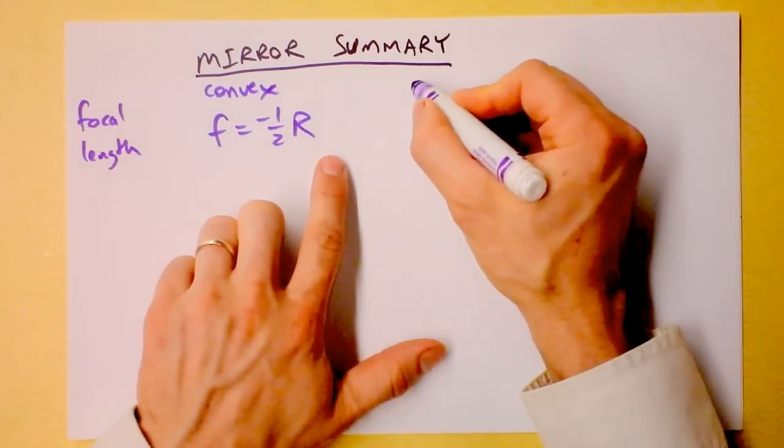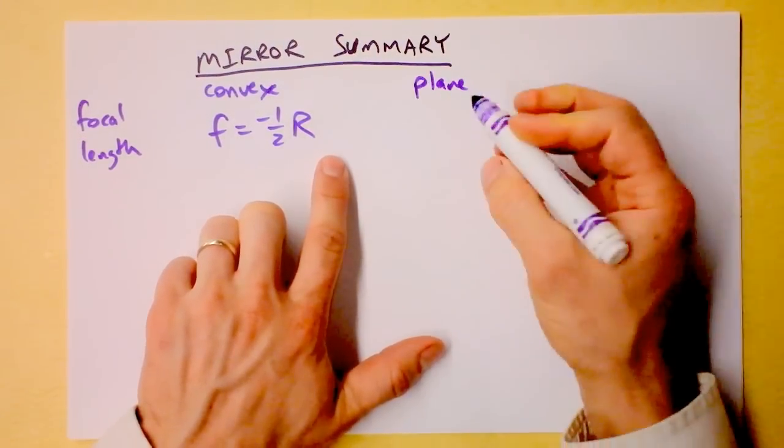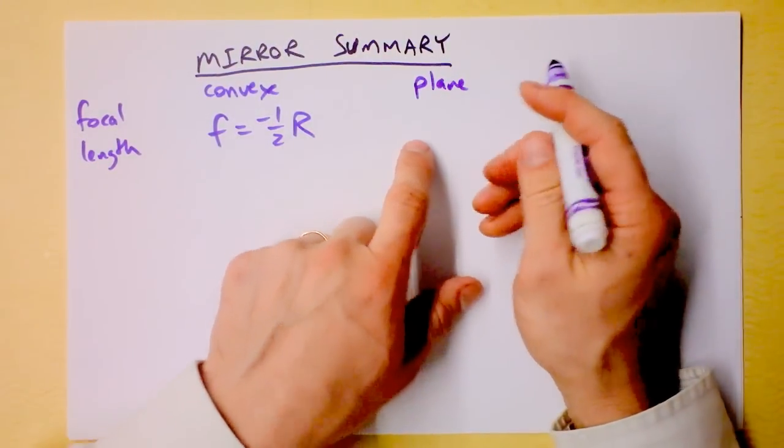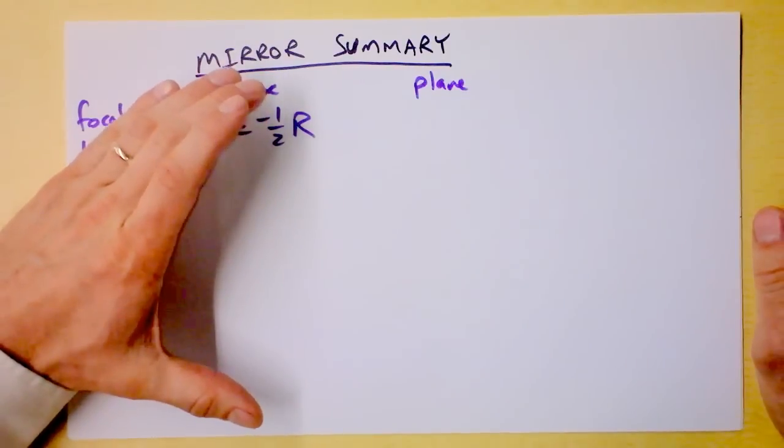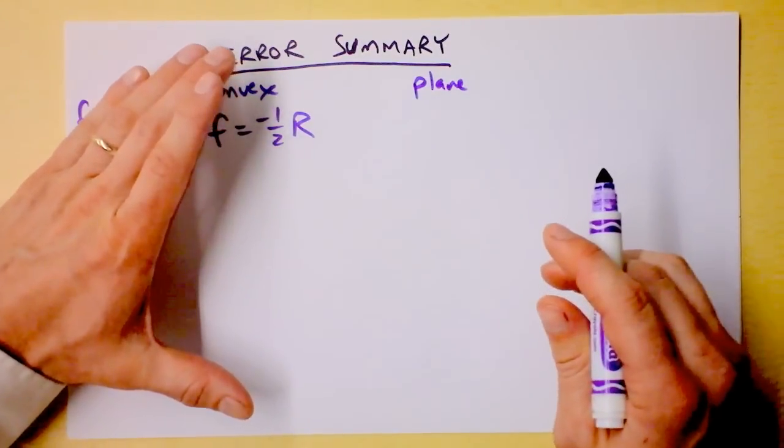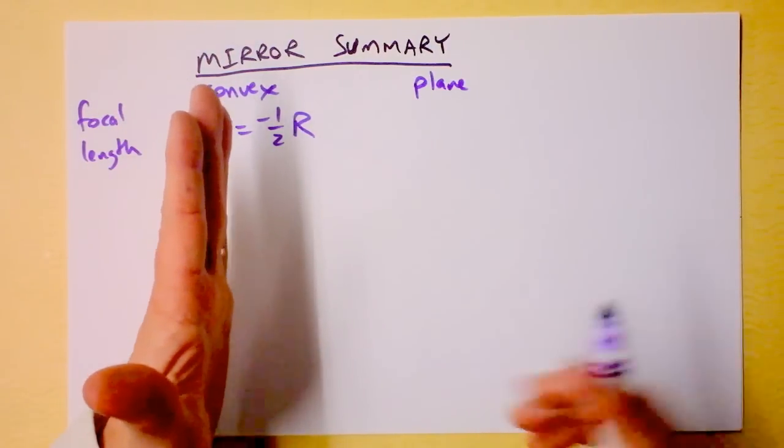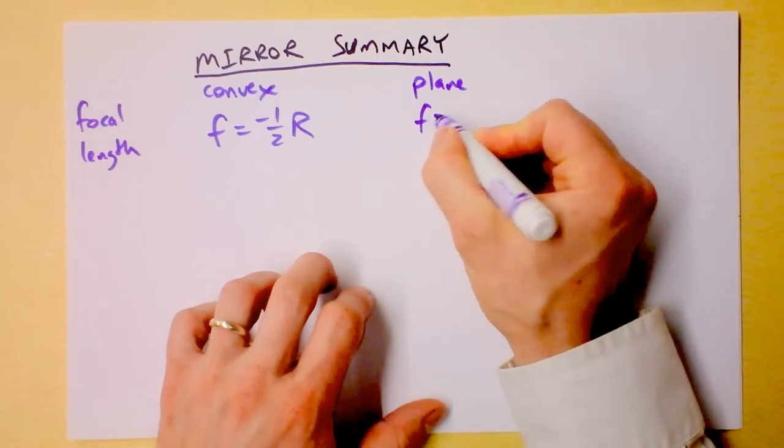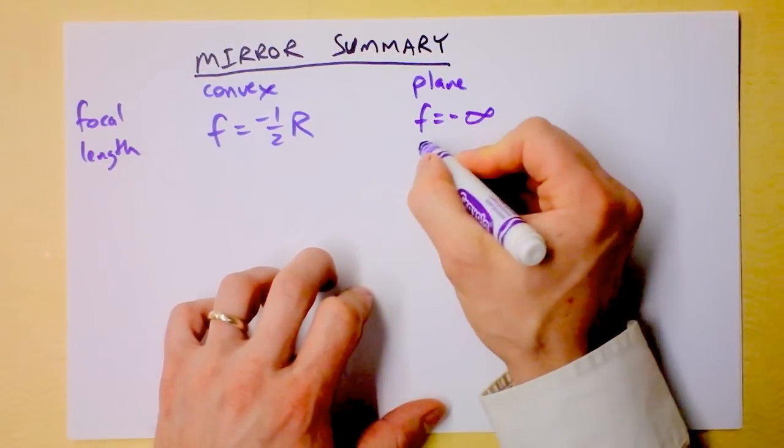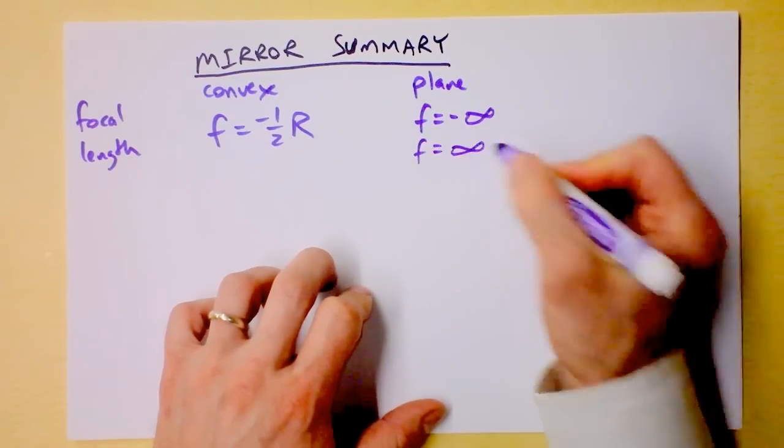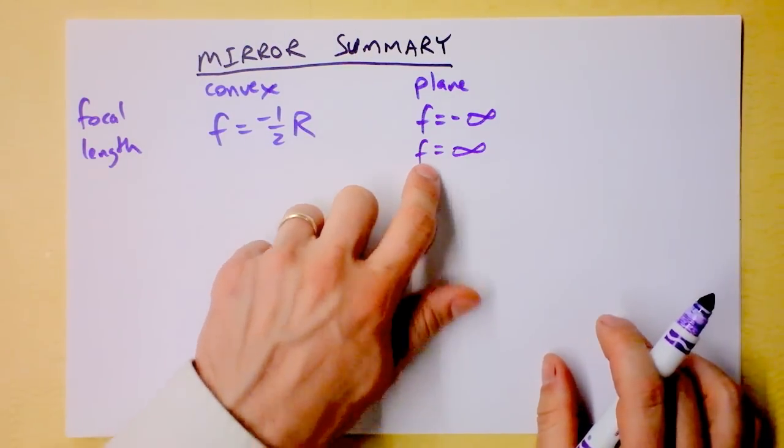And then over here, at the plane mirror, the focal length, well, think about it like this: if it's one-half R, I'm going to use the same equation. I'm going to say that the radius is getting bigger and bigger and bigger until ultimately I get to a plane mirror. At a plane mirror, that focal length is actually negative infinity, which is the same thing as positive infinity. It's just really far away.